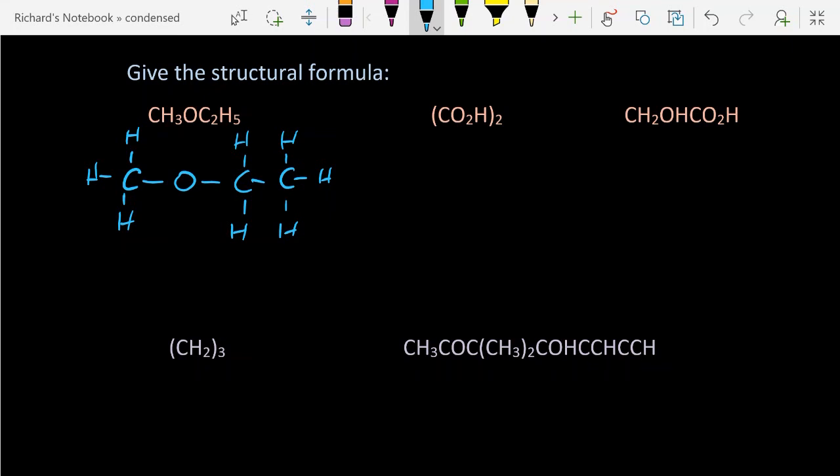For the next one, CO2H is code for the carboxylic acid group. But I've got two of them, so how am I going to squash those together? Well, this carbon here can be extended out like that. So that's ethandioic acid.